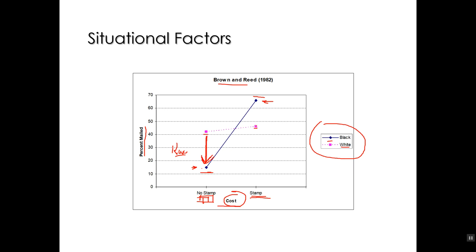But what about this other side? Is that difference — where white people help black people more than white people when there is a stamp — racism? No, actually it's like anti-racism: white people are helping black people more than they would help other white people. We call this the extra break effect, and we see this often.